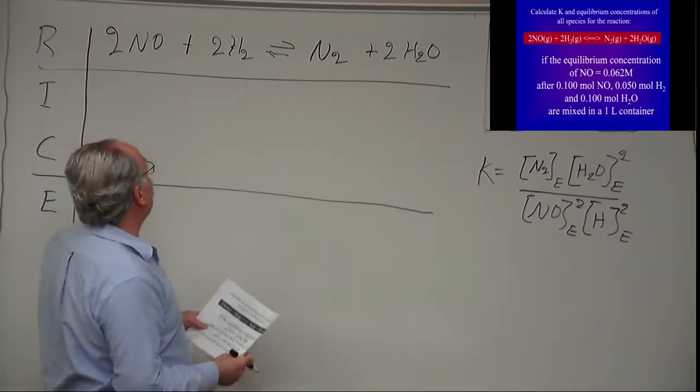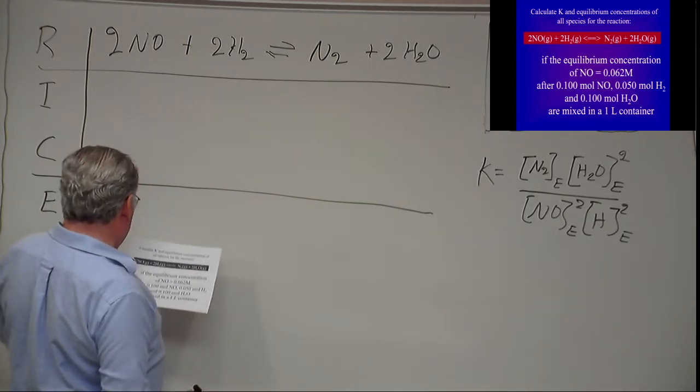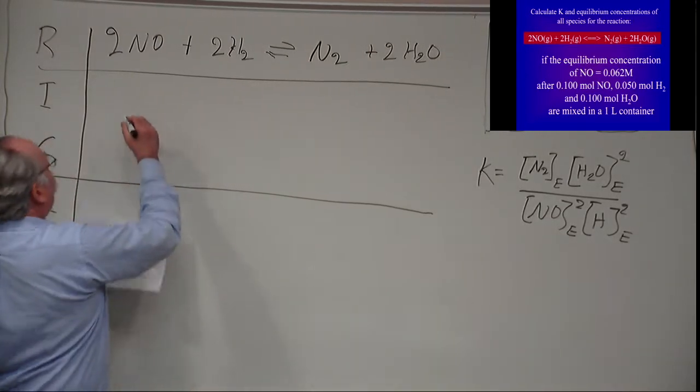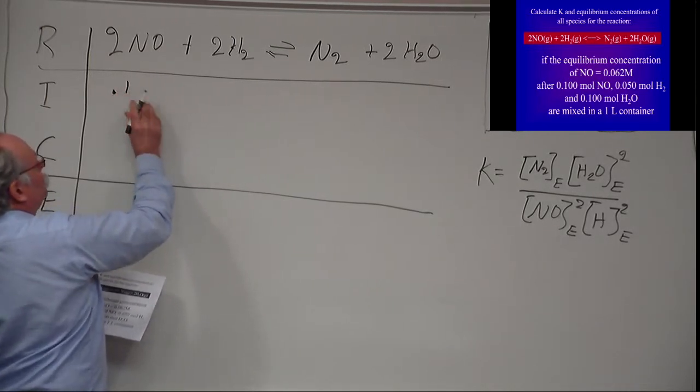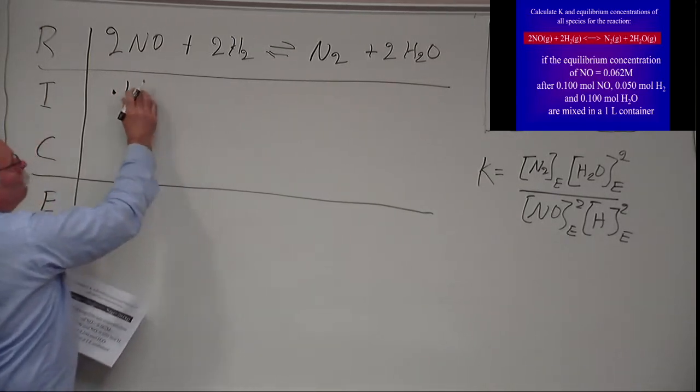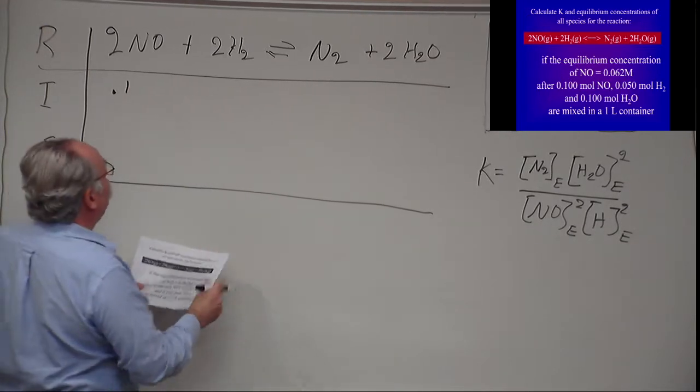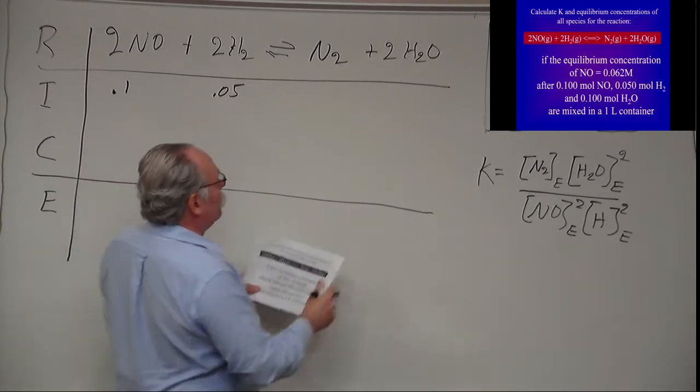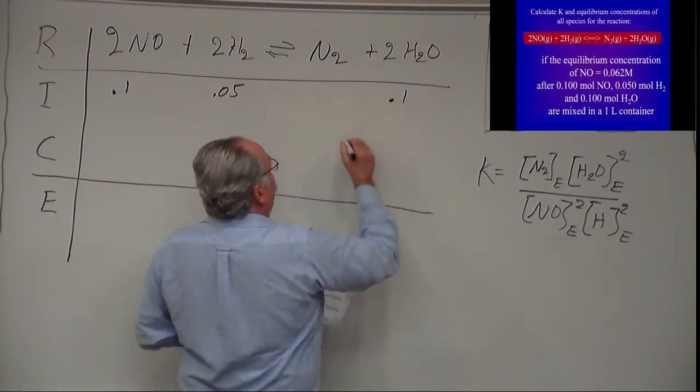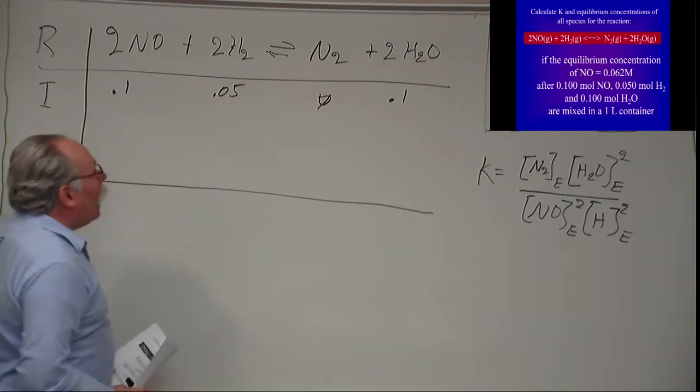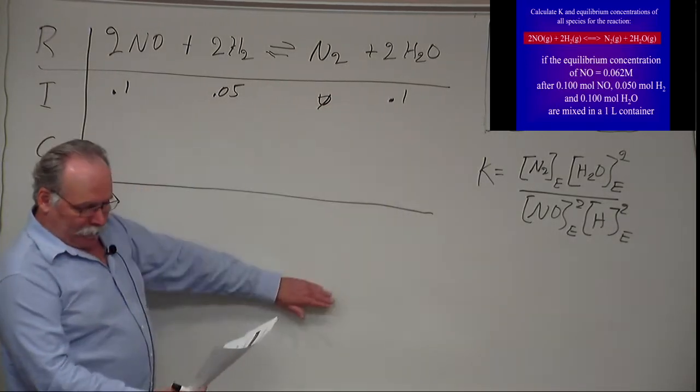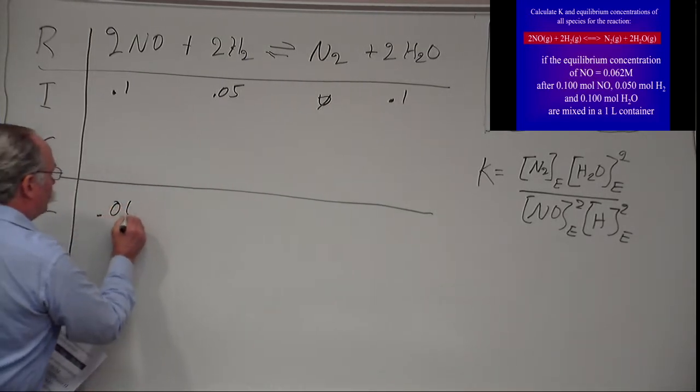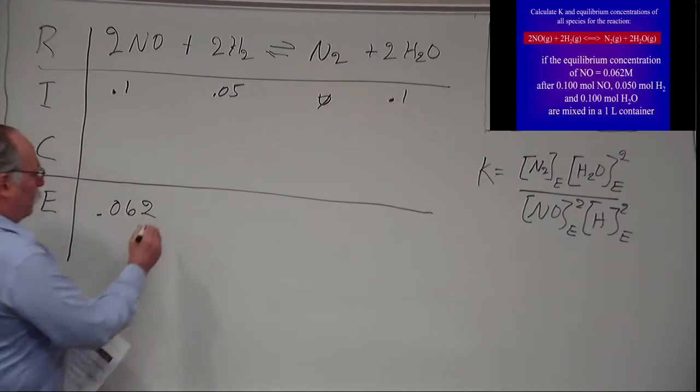Now what did we start with? What we started with, and I have in my handout which you've got up on the overlay, is we started with 0.1 molar. We have in a 1 liter container so this is 0.1, and this should be concentration, so it's 0.1 moles per liter. We have 0.05, and we have 0.1, and we have none of this. And then I like to write down what I'm given, and the other thing we know is that at equilibrium this is 0.062 molar.